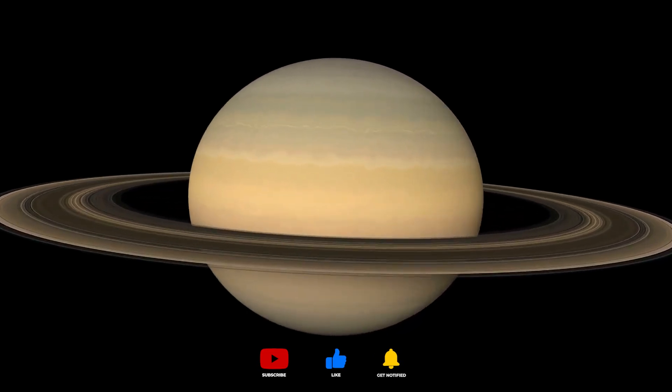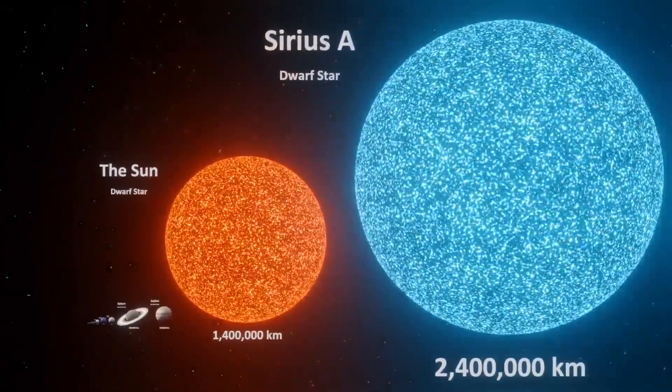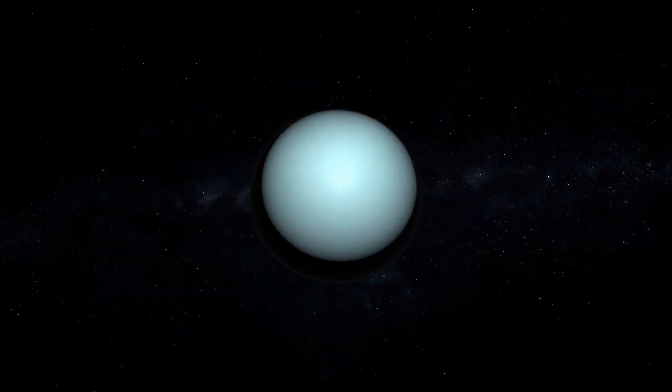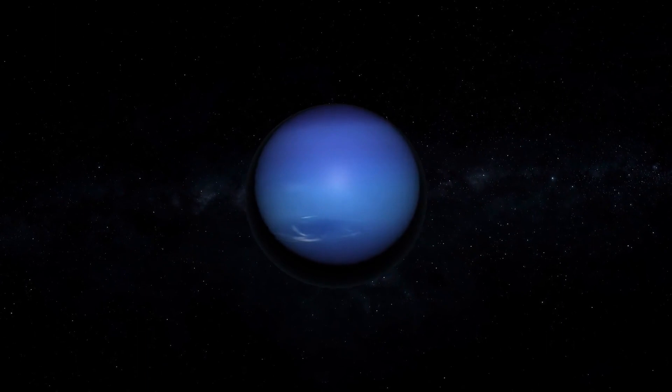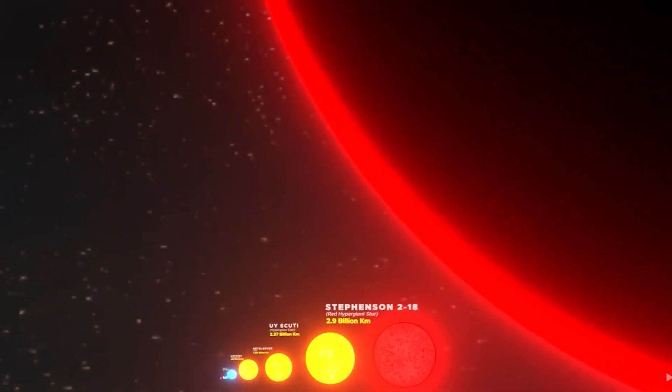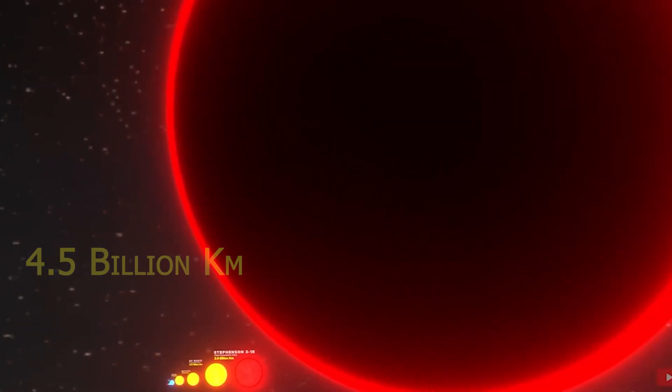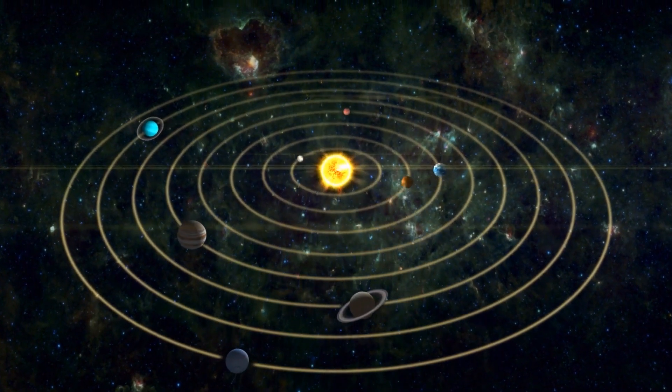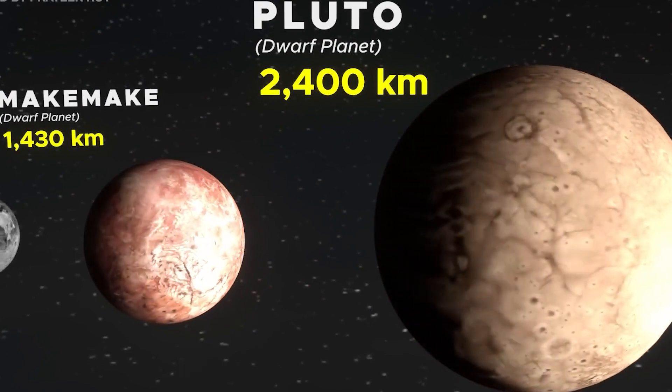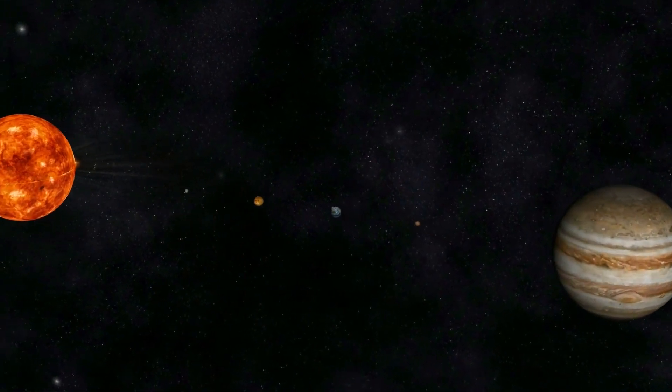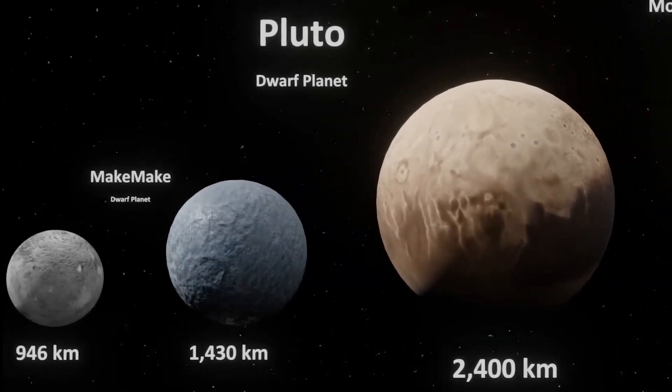Saturn, known for its magnificent rings, orbits at an average distance of approximately 1.4 billion kilometers. Uranus, the seventh planet from the Sun, is located around 2.9 billion kilometers away. Neptune, the farthest known planet in our solar system, sits at an average distance of about 4.5 billion kilometers from the Sun. Beyond Neptune lies the region of the solar system known as the Kuiper Belt, which is home to many icy bodies, including Pluto. Pluto, once considered the ninth planet, was reclassified as a dwarf planet in 2006. It orbits at an average distance of about 5.9 billion kilometers from the Sun.